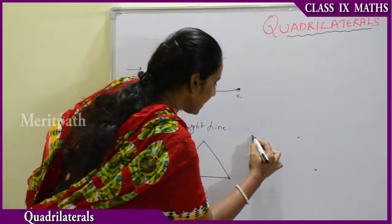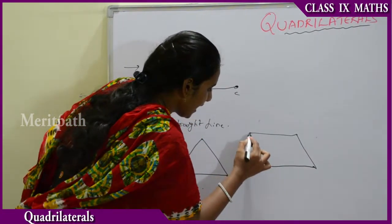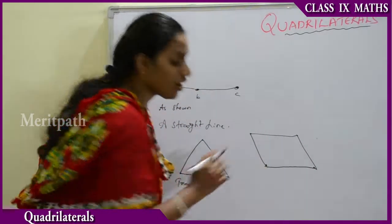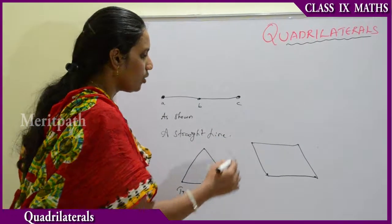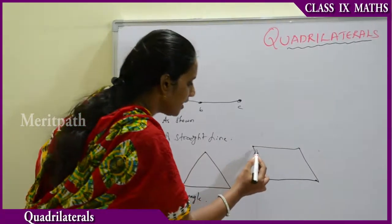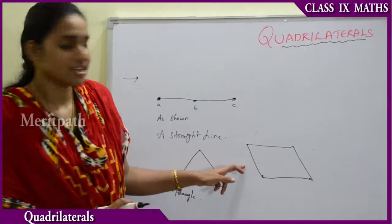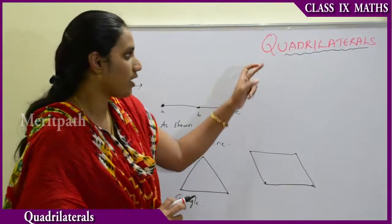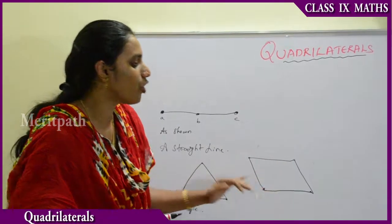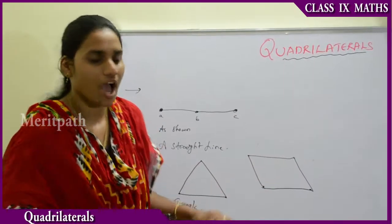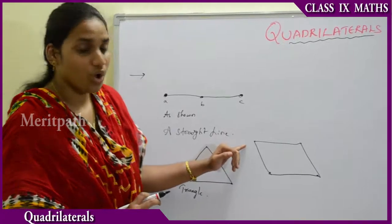When these three points are taken as non-collinear points, and we join each point to the other, we observe that they form a closed figure — that is, a triangle.